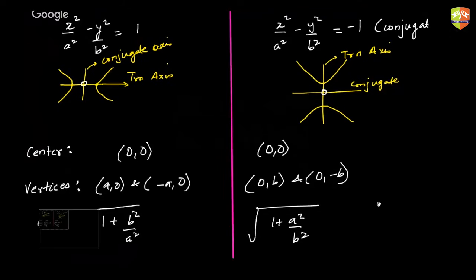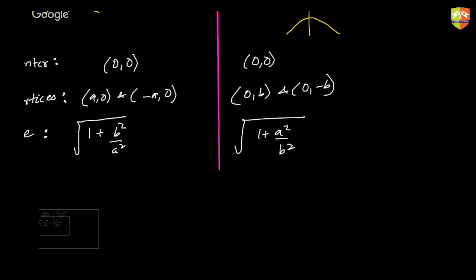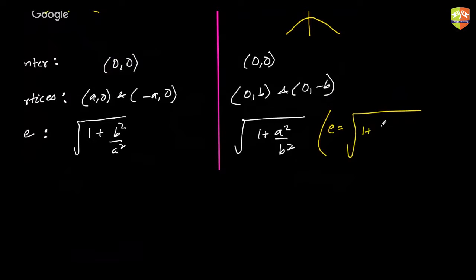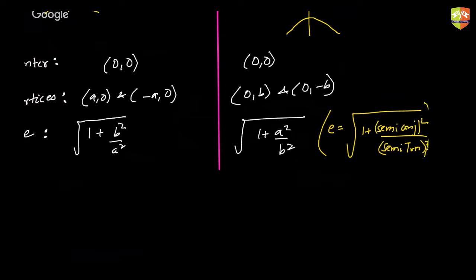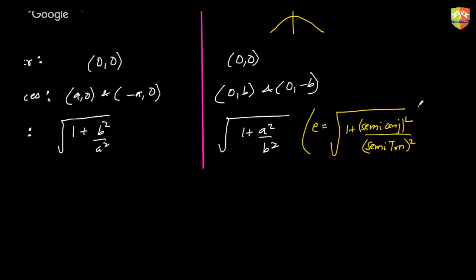In both cases, eccentricity is given by the universal formula: e = √(1 + (semi-conjugate axis)² / (semi-transverse axis)²). Please keep this formula in mind.